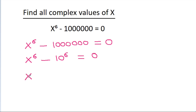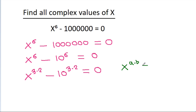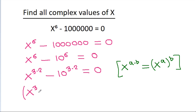We rewrite this as x power 6 is 3 times 2, and 10 power 6 is 3 times 2, equal to 0. Using the rule x power (a times b) equals x power a power b, this becomes x power 3 power 2 minus 10 power 3 power 2, equal to 0.